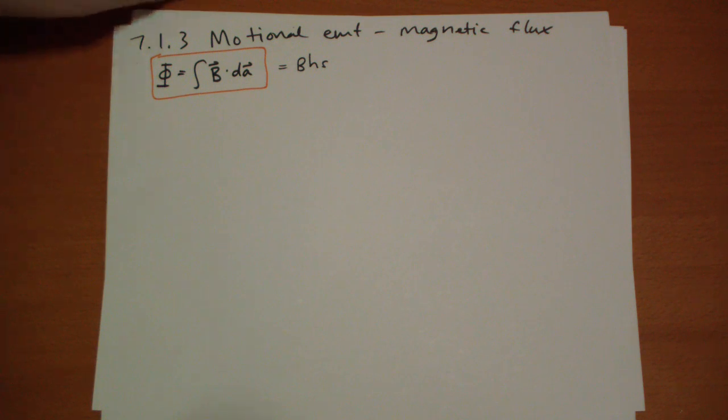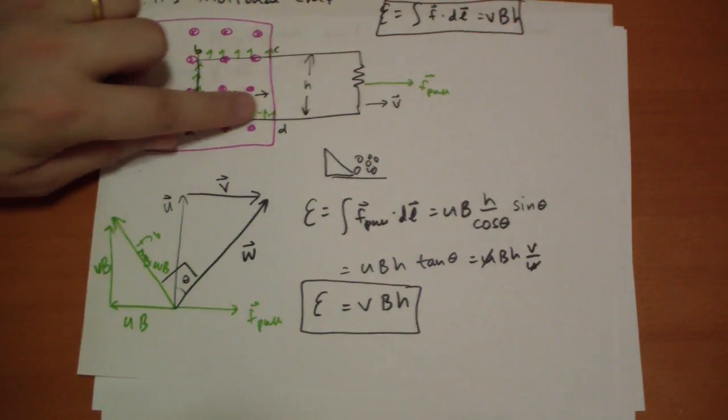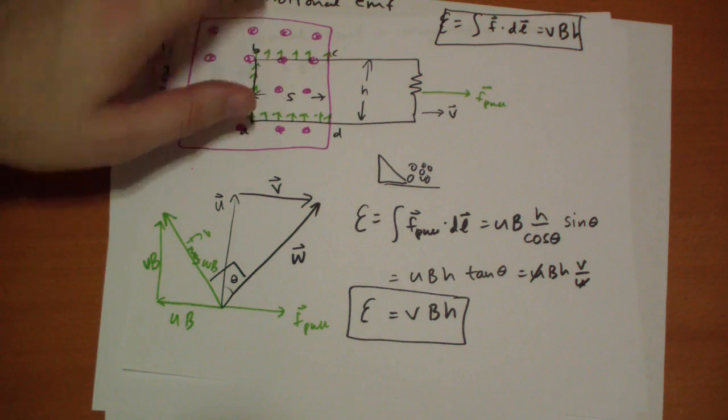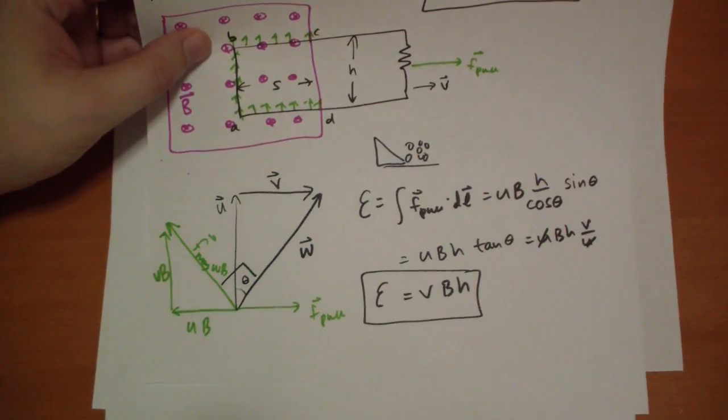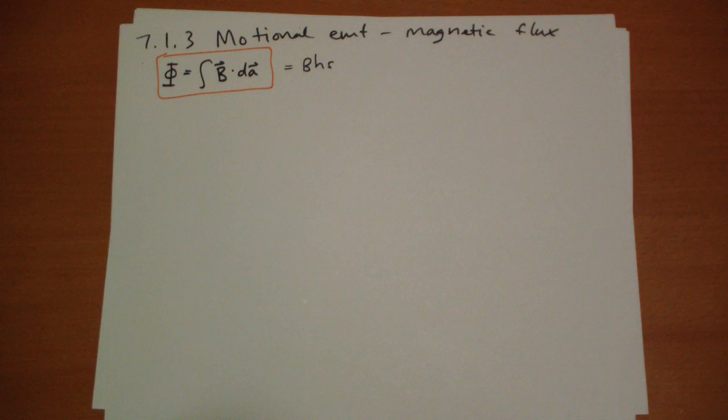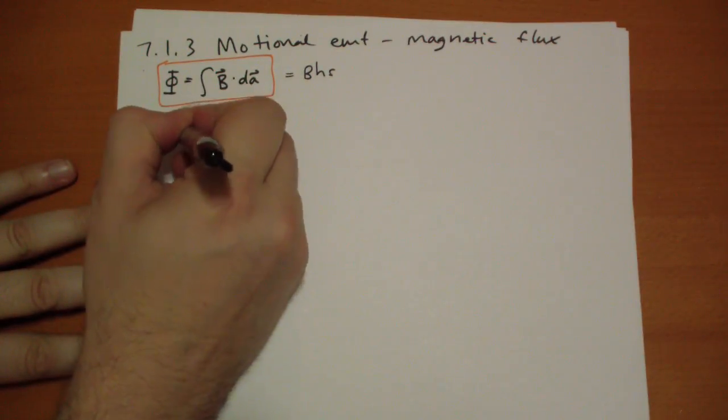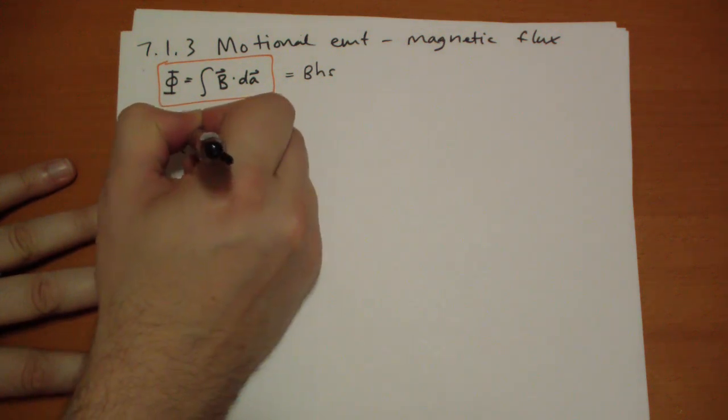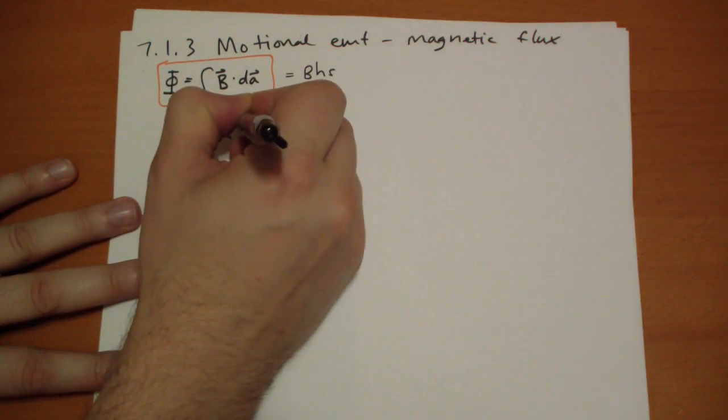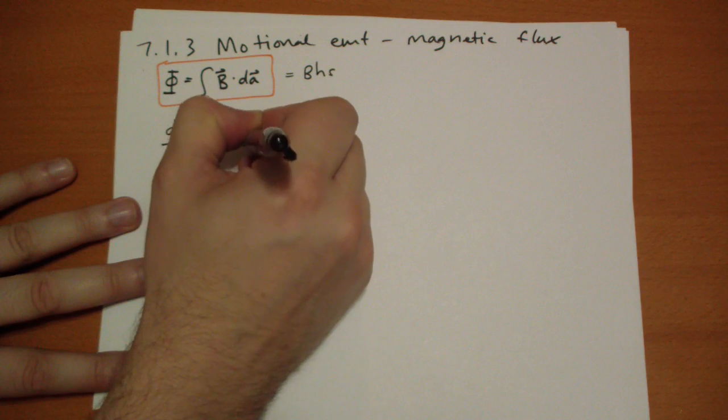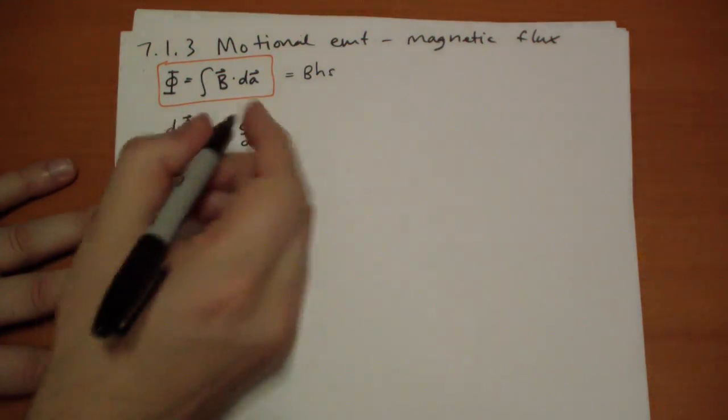As the loop moves, the flux changes. As we're moving through, the flux changes. How does it change? Well, this area decreases by the amount that S decreases by. So we can write the change in the flux over time is equal to BH times the change in S over time. And what's that equal to?